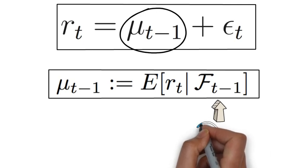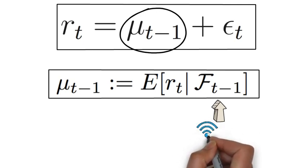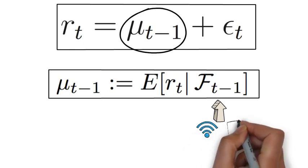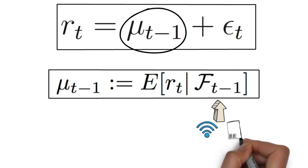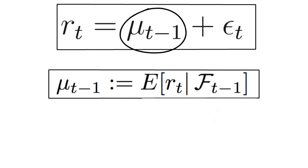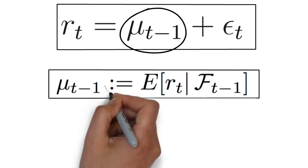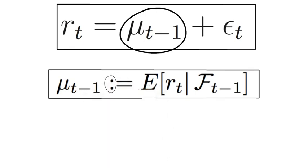Simplistically speaking, all information that you can find on the internet or in newspapers as of time t-1 is part of your information set FT-1. And by the way, the two dots in front of the equality sign highlight that that's a definition.